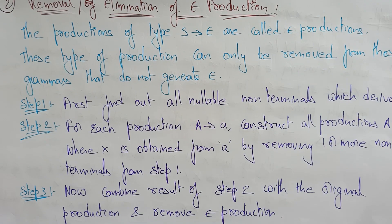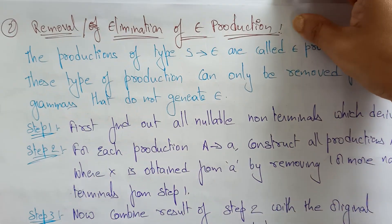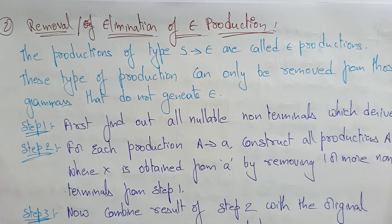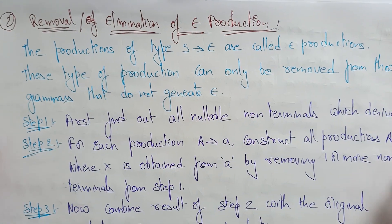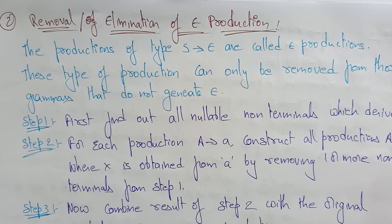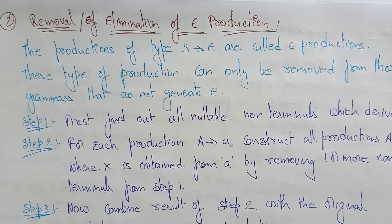Hi students, welcome back. Now continuing with the simplification of context-free grammar from the previous video. To reduce the given grammar, we have to do three things: one is the removal of useless symbols, elimination of epsilon productions, or elimination of unit productions.